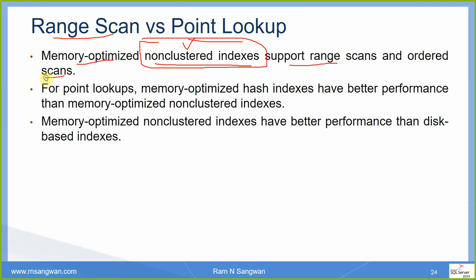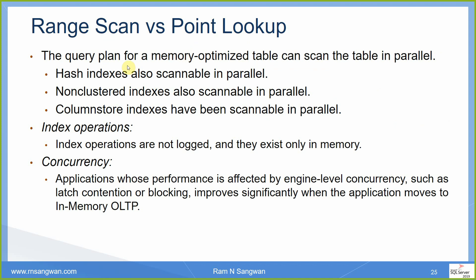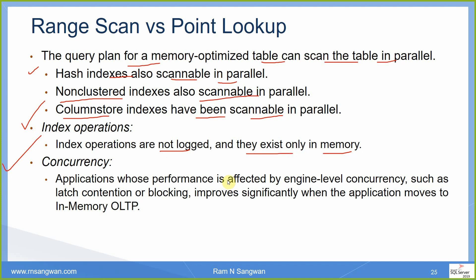Memory-optimized non-clustered indexes support range scan and order scan. For point lookups, memory-optimized hash indexes have better performance than memory-optimized non-clustered indexes. The query plan for a memory-optimized table can scan the table in parallel; hash indexes, non-clustered indexes, and column store indexes are all scannable in parallel. Index operations are not logged and exist only in memory. Applications whose performance is affected by engine-level concurrency — such as latch contention or blocking — improve significantly when moving to in-memory OLTP tables.